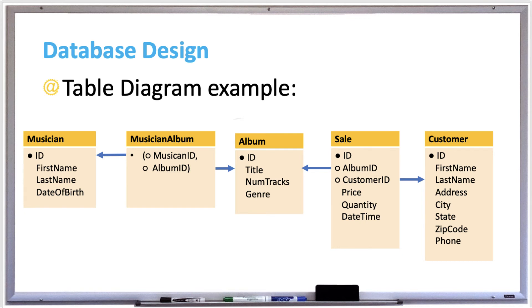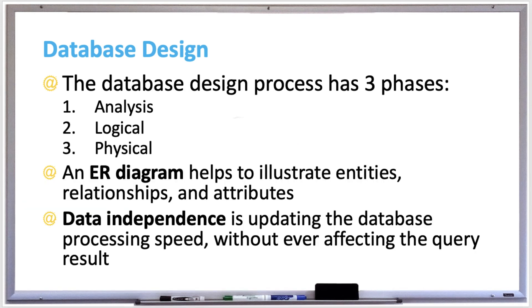The keys within these tables are the solid bullet points, and the columns that refer to the keys are the empty bullet points with the arrows. The third phase of the database design process is the physical design phase, which optimizes the data by adding indexes and specifies how to organize the tables on storage.